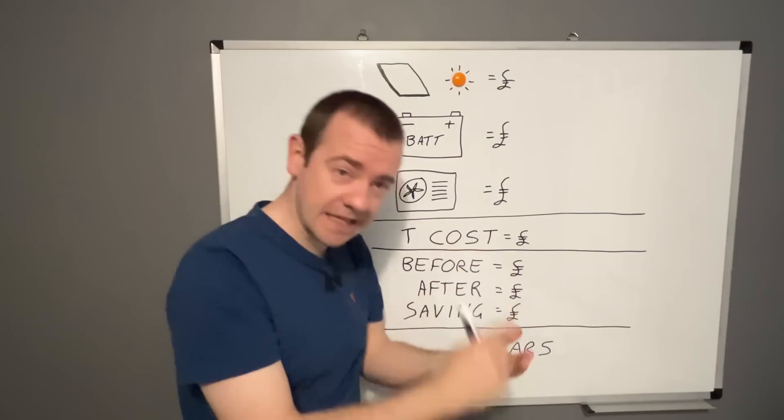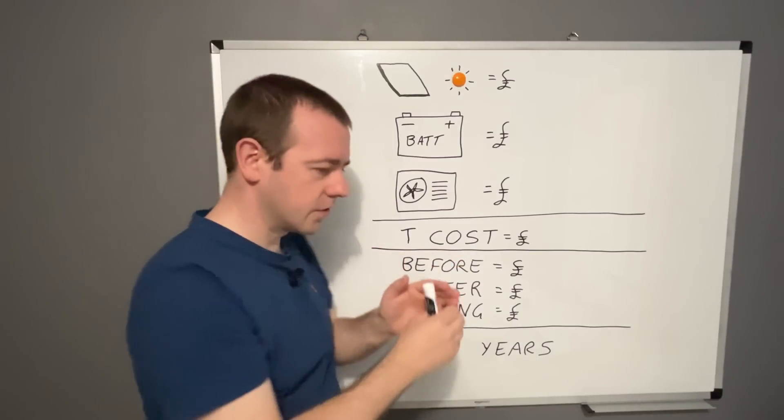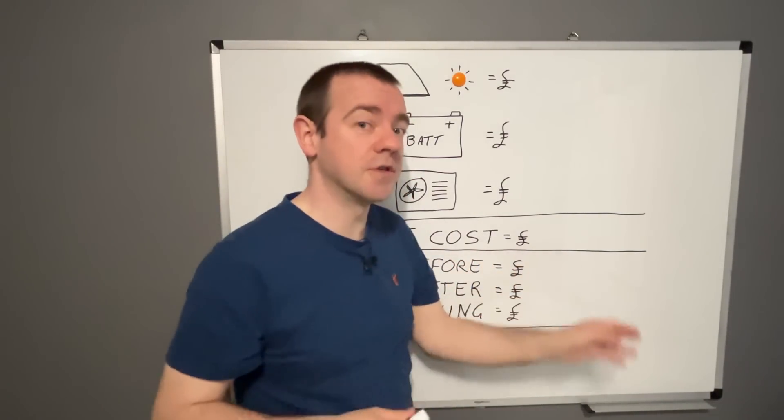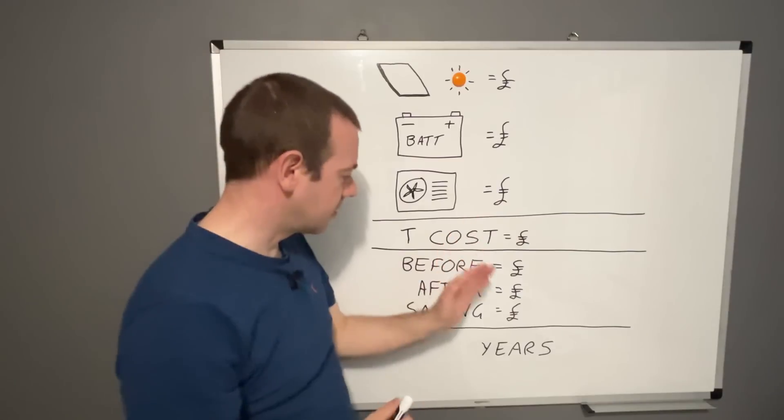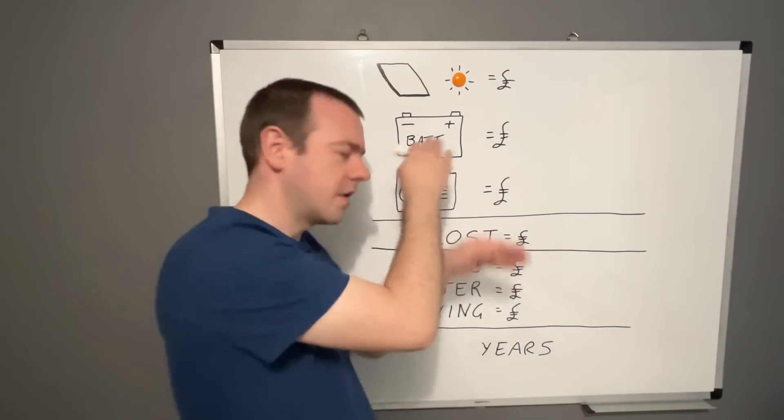Effectively, that's the cost of the house if we hadn't have done any of this. So the electric and the gas, if we just were as we were beforehand. So there's been no solar panels, no battery, no heat pump. It's just what it would have cost us at today's rates. So gas and electric, given the usage of what we used before all this turned up.